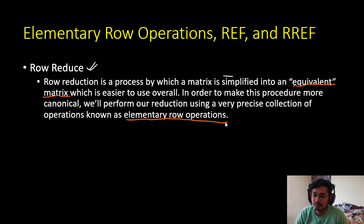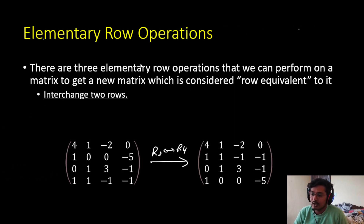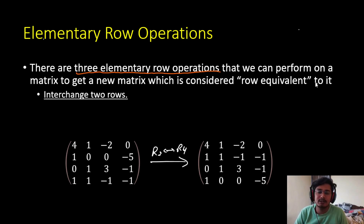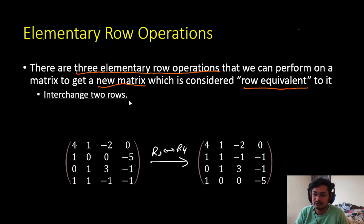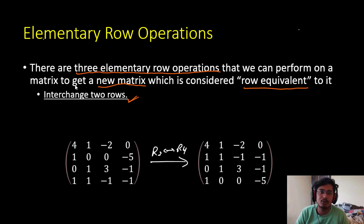Elementary row operations consist of three steps. We have three elementary row operations which we can perform to get a new matrix that is equivalent to the old matrix — this is called row equivalent. We will perform some operations to get a new simpler matrix equivalent to the original matrix. The first operation we can do is interchanging two rows.